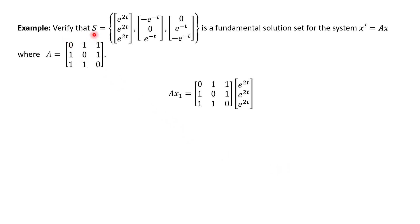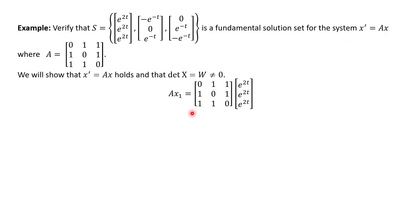Let's work out an example: we verify that a given solution set is a fundamental solution set to the system x prime equals ax, where a is given. The solution set has three vectors x1, x2, x3. For each one, we multiply matrix a times the vector and check that the result equals the derivative of the vector. Starting with x1: we multiply a times x1 and compare with x1 prime — differentiating each entry of x1 should give the same result if it's a solution.